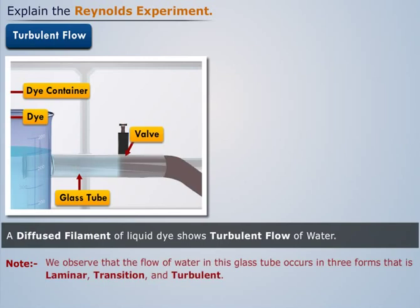Thus we observe that the flow of water in this glass tube occurs in three forms: laminar, transition, and turbulence.